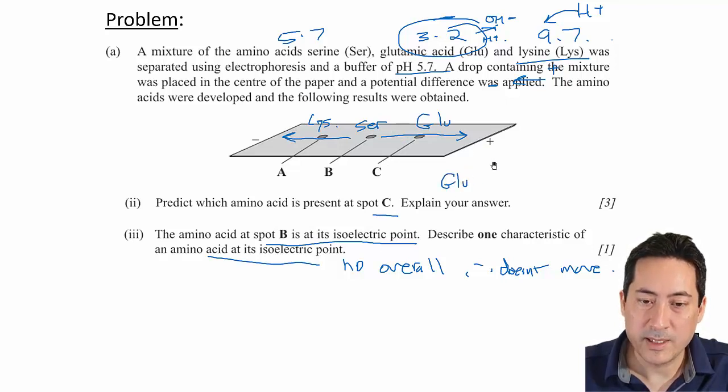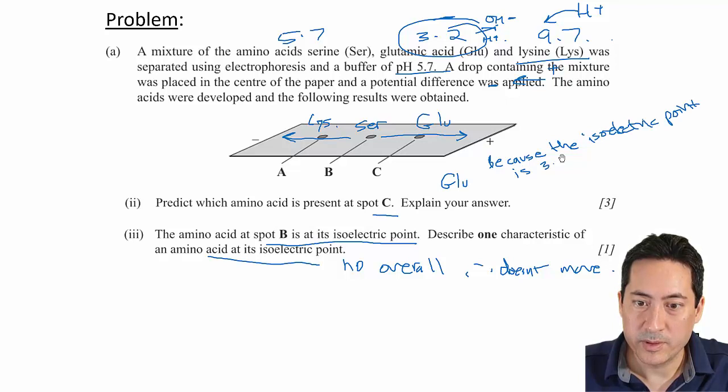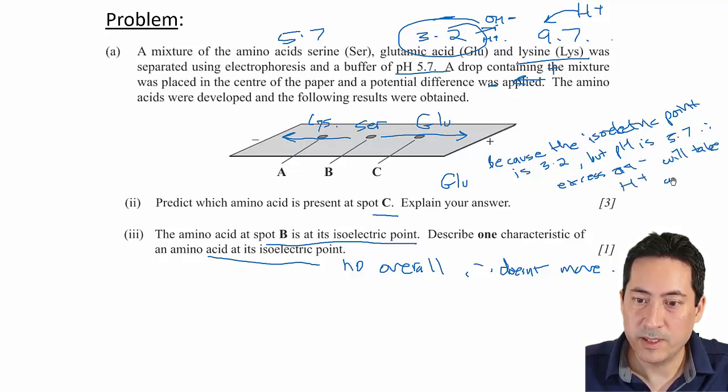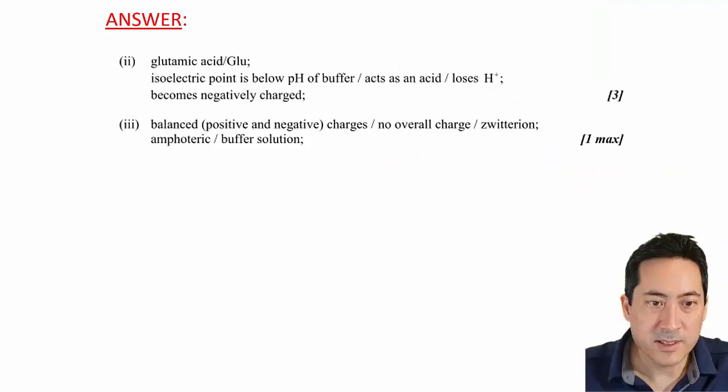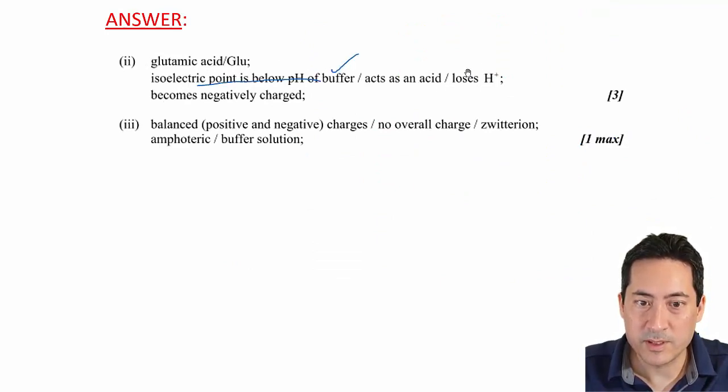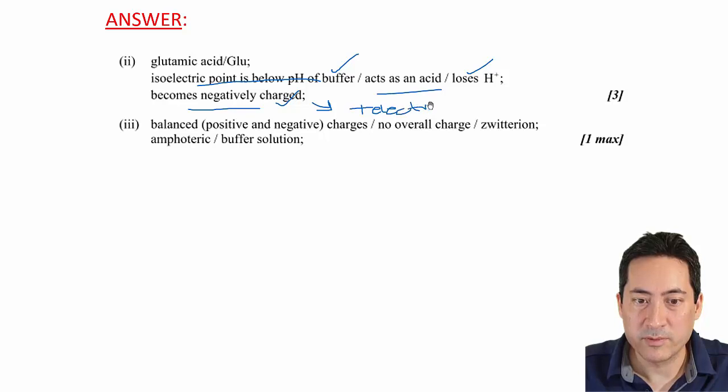So GLU, we can say that because the isoelectric point is 3.2, but pH is 5.7. Therefore, excess OH minuses will take H pluses away, leaving glutamic acid negative of the negative charge, moving towards positive electrode. And I've seen the students write more messy than that. That's just barely passable. Okay. So let's just see what the answers are. Yes, it is glutamic acid. So one point for saying the isoelectric point, we've got that. It loses H. We didn't say it acts as an acid. It becomes negatively charged. They really should have a fourth point and say it moves towards the positive electrode.